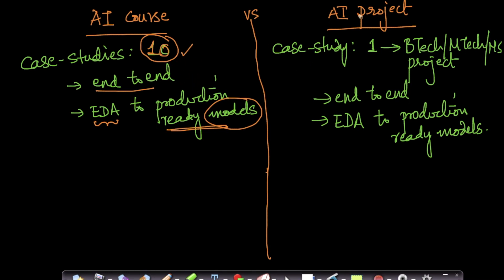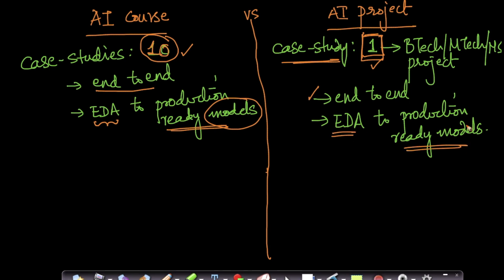In the AI project we solve one case study, because in a BTECH, MTECH, or MS program you typically take one problem and solve it end-to-end. This case study is solved thoroughly end-to-end, from exploratory data analysis up to multiple production-ready models in increasing order of complexity. The fundamental difference is: one case study in the AI project versus 10 in the AI course.